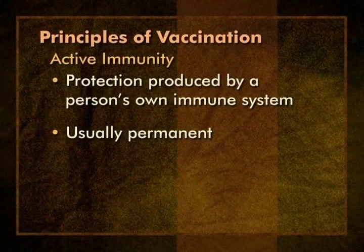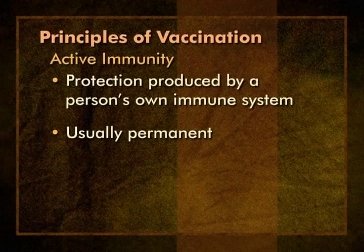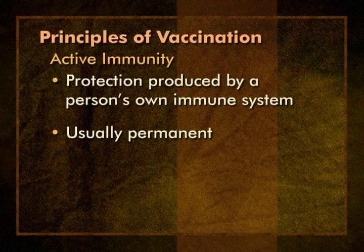Active immunity is the best type because it is protection provided by a person's own immune system. Active immunity is usually permanent and provides long-lasting protection against reinfection with that virus or bacterium. A good model for active immunity is that which occurs after an infectious disease. In most cases, lifelong immunity results if a person survives an infectious disease. Second infections, at least symptomatic infections, are not common in an immune person. Here is a short animation to illustrate the process of active immunity from infection.